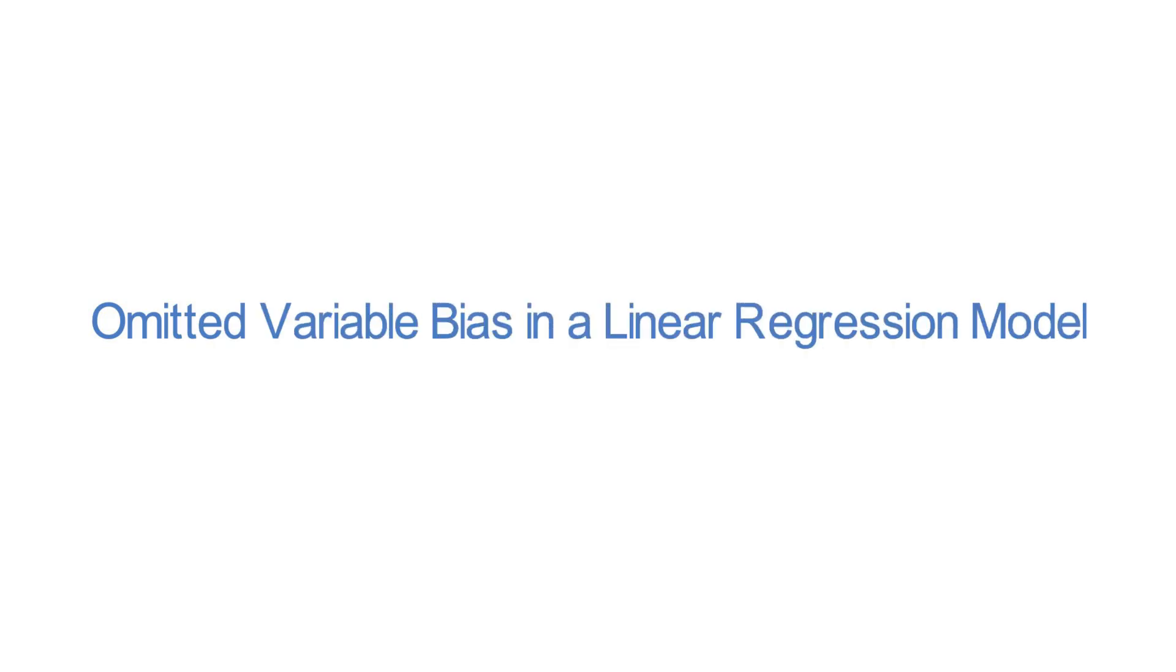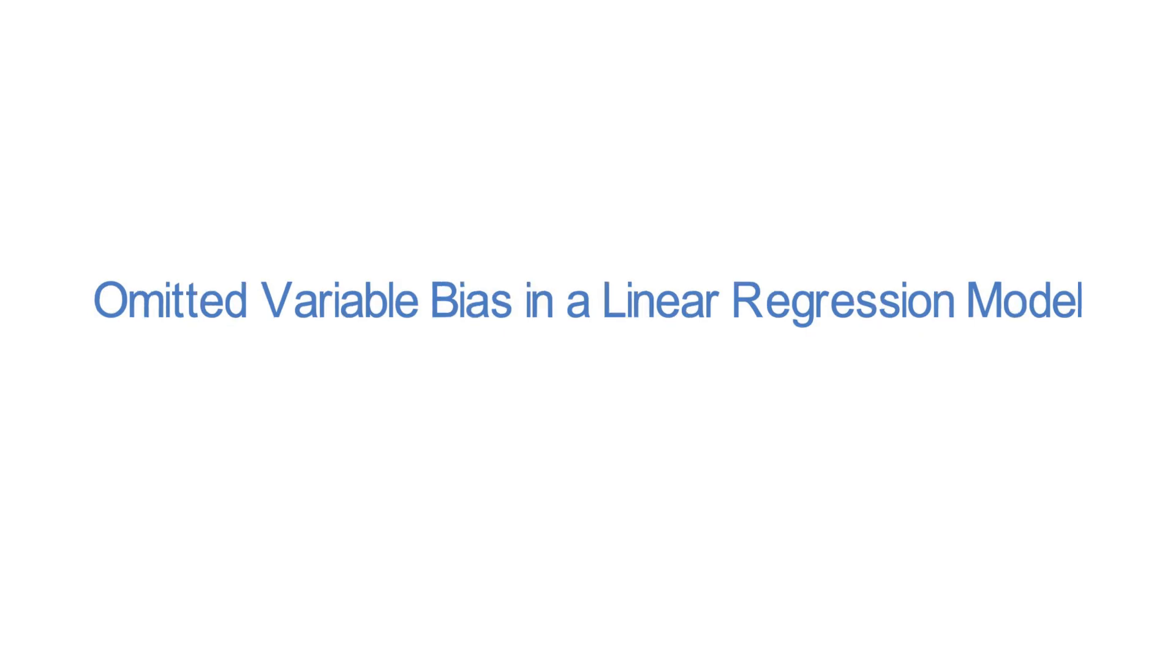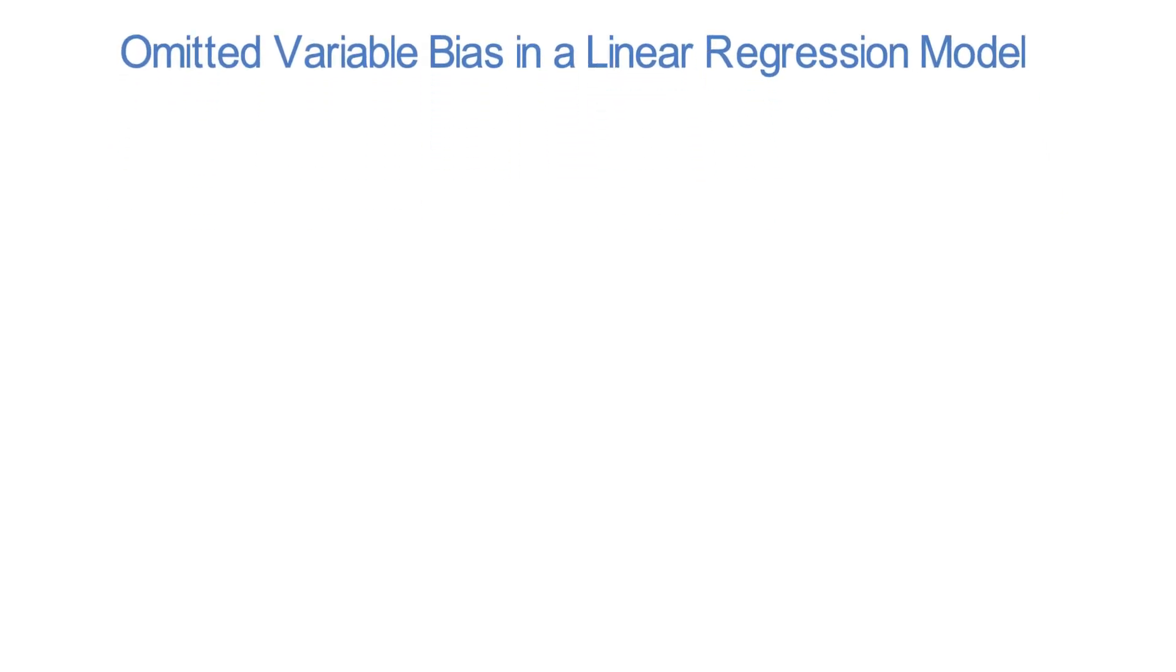This video explains the concept and implication of an omitted variable bias in a linear regression model. Simply speaking, an omitted variable bias of a linear regression model